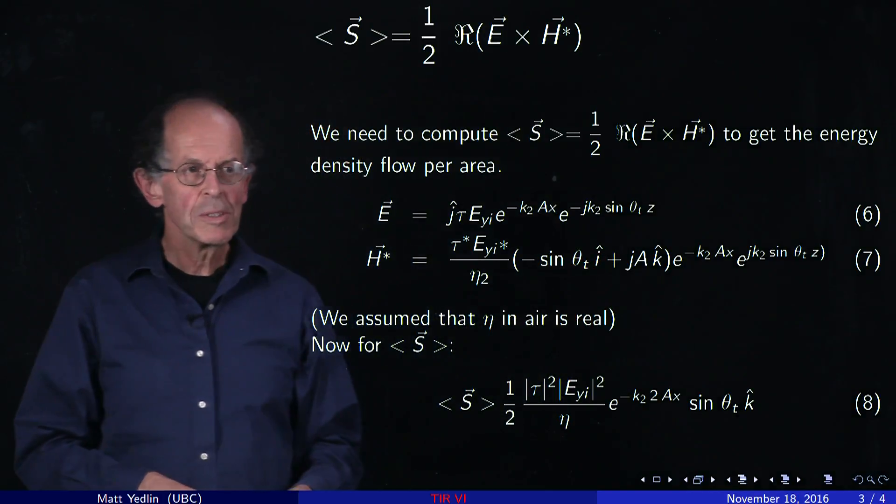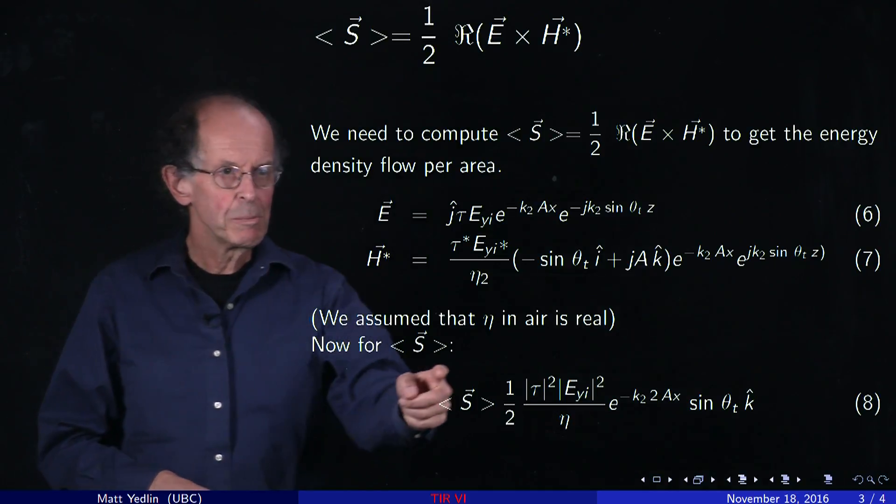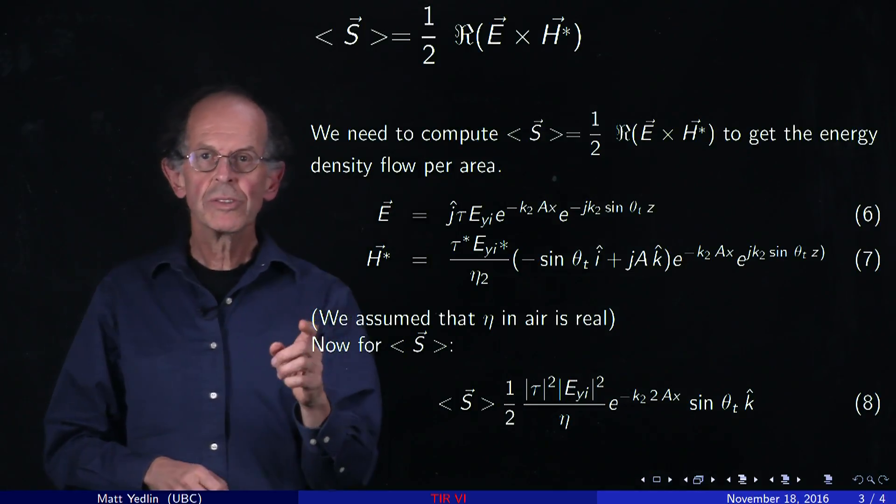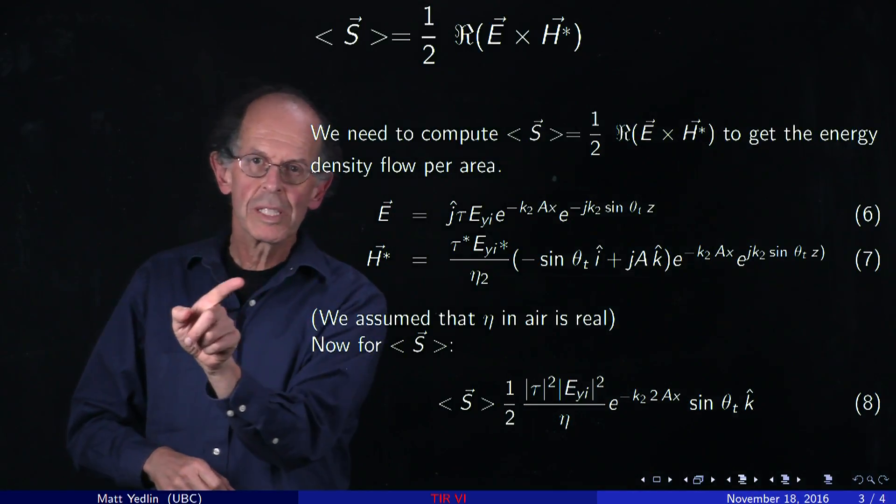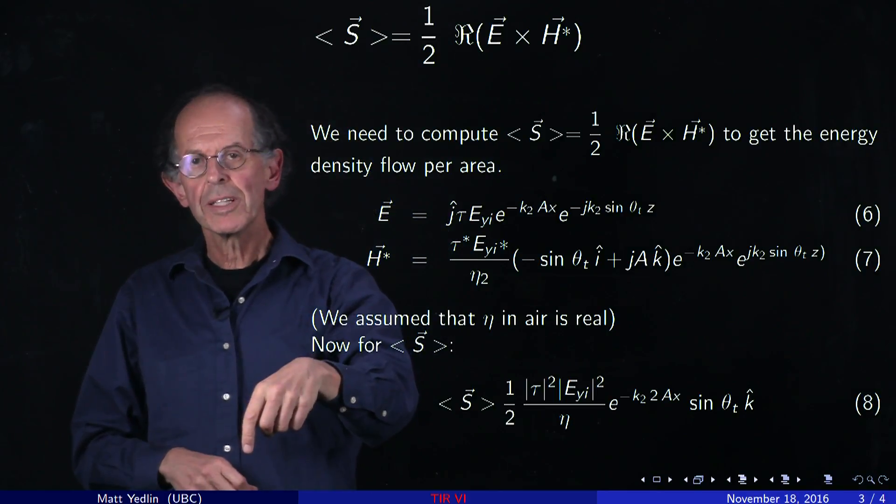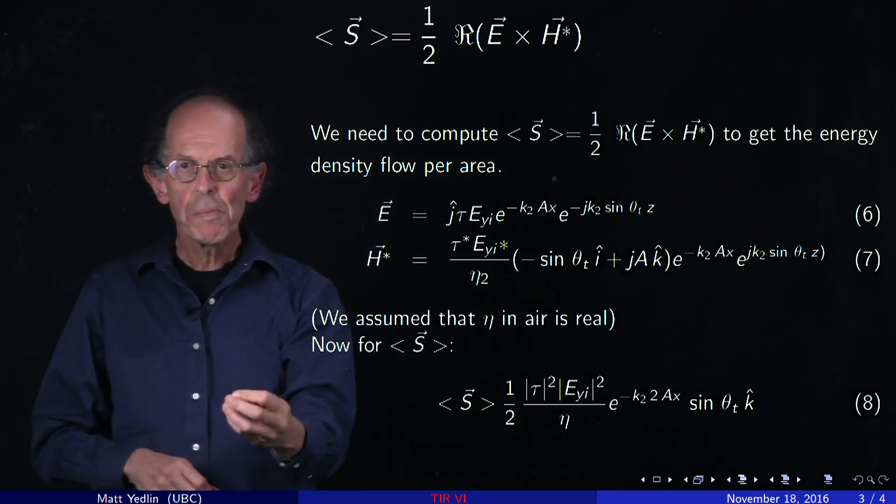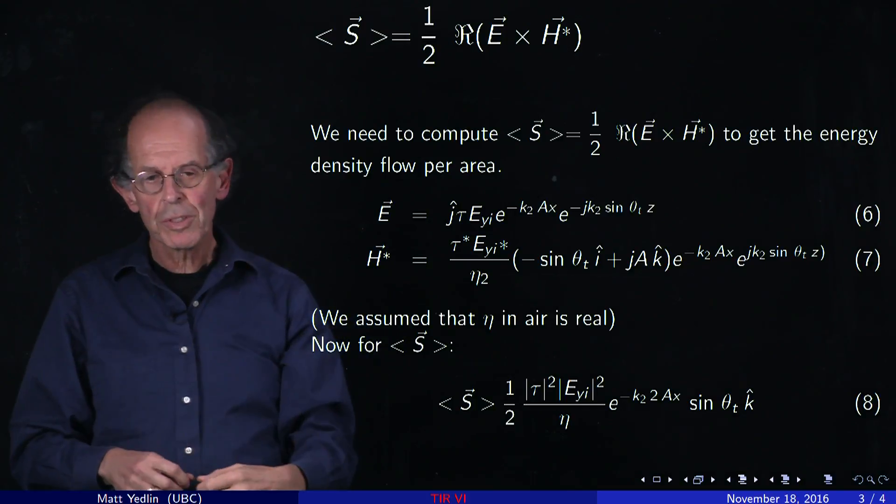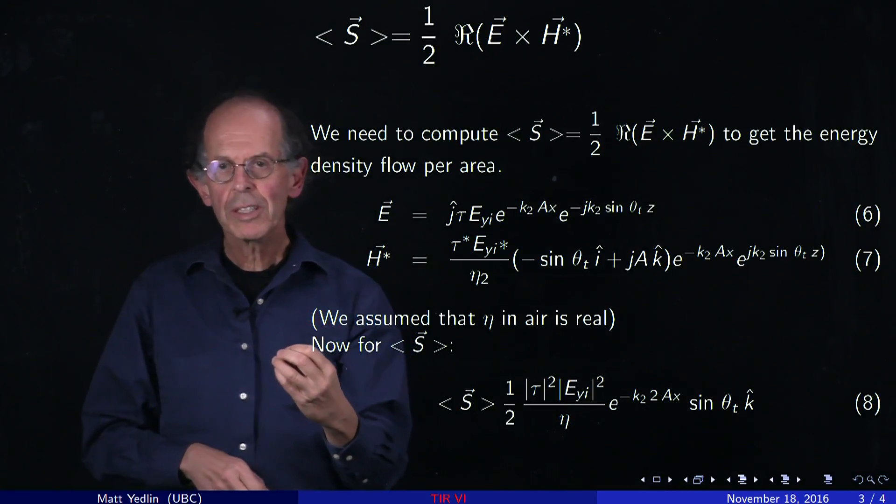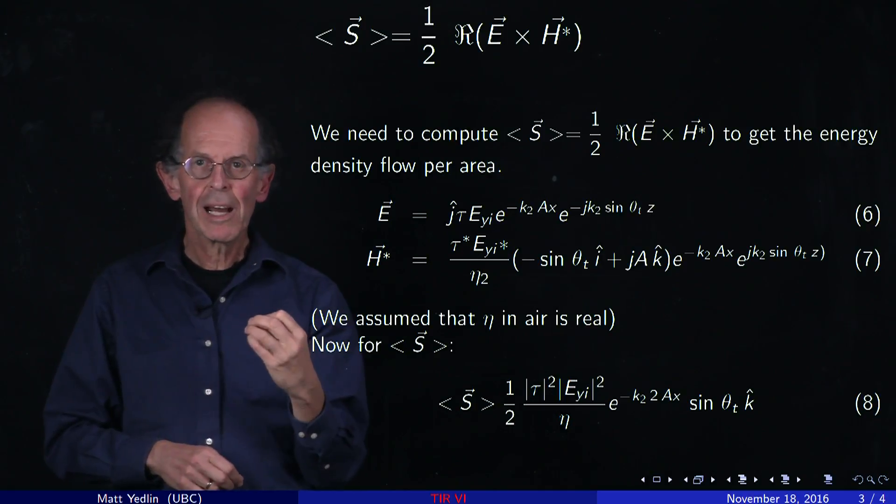Now, doing the mechanics of the cross product, we compute S. Notice that the direction of S is only along the interface, not normal to the interface. That means no power is delivered downwards. This has great implications for your project on the light board and how it works.